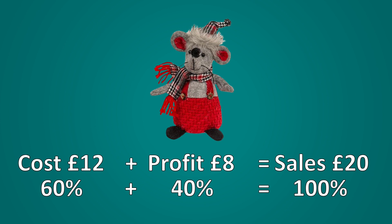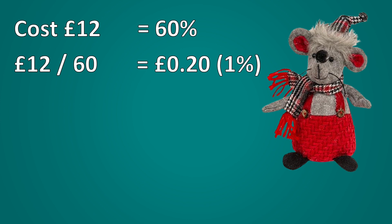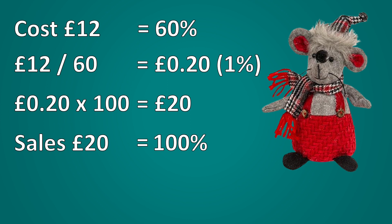Thinking about exam questions — what if you were given the cost and had to work back to the selling price? If the margin was 40% and instead of the selling price you were given the cost of sales, i.e. £12, we know that on a margin basis the cost represents 60% and the selling price 100%. So we'd take £12 and divide by 60 to get 1%, then multiply by 100 to get the selling price: 12 divided by 60 equals 0.2, times 100 equals £20.